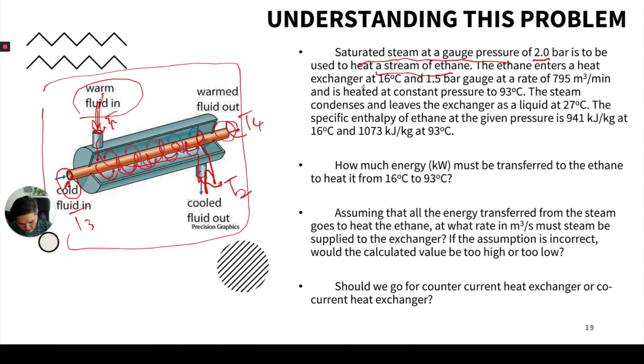Ethane is coming from here from 16 degrees Celsius until it reaches 93 degrees Celsius, and the pressure is 1.5 bar gauge at a rate of 795 cubic meters per minute.